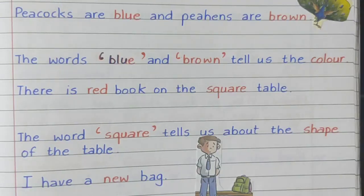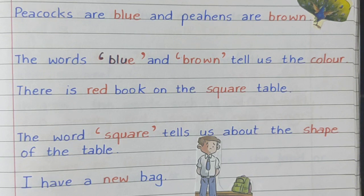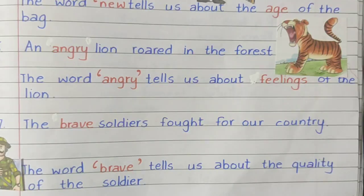Peacocks are blue and peahens are brown. The words blue and brown tell us the color. 'There is a red book on the square table.' The word square tells us about the shape of the table. 'I have a new bag.' The word new tells us about the age of the bag. 'An angry lion roared in the forest.' The word angry tells us about the feelings of the lion.